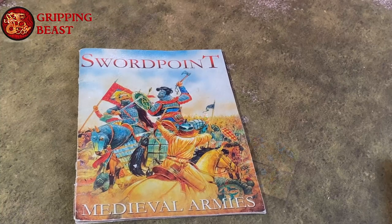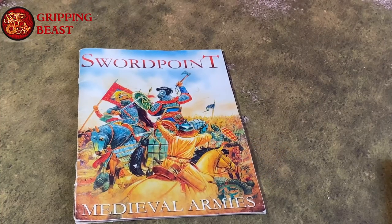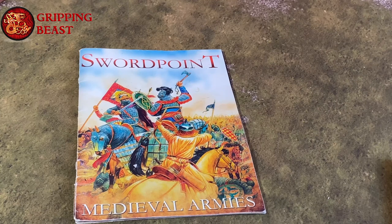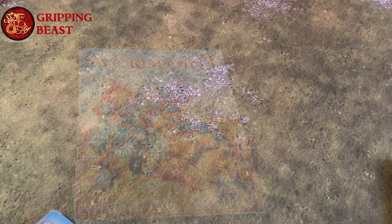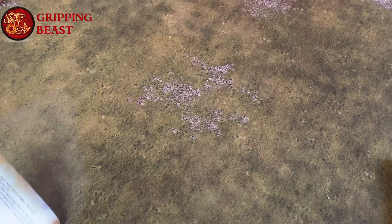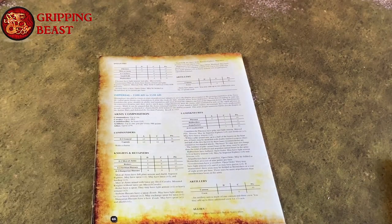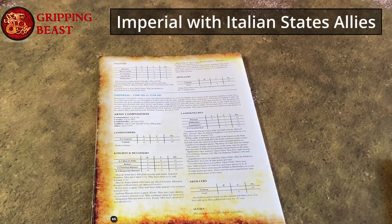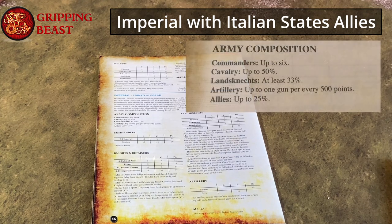In this video we will take a look at how you put together an army list for the game of Swordpoint. For this example I'm going to be using the medieval army supplement and the list I'm going to illustrate is an imperial list. Each army list will tell you what proportion of different troop types you can have. This is called the army composition.